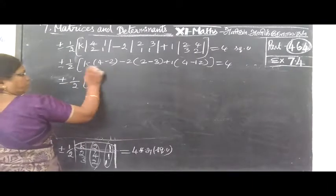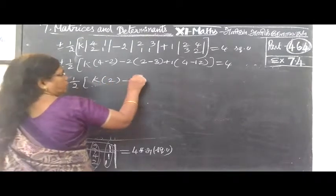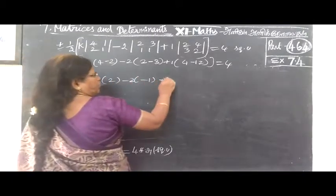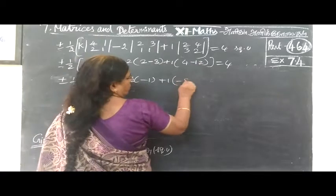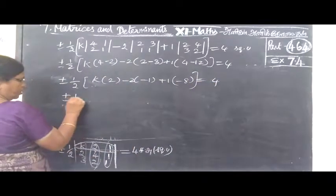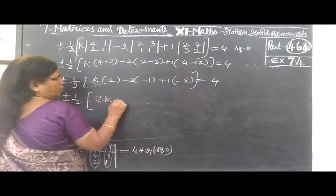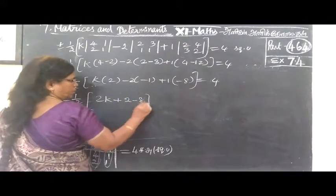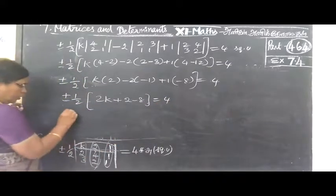4K. K bracket 2 minus 2 minus 1, then minus 8 equal to 4. So plus or minus this row. So 2K plus 2 minus 8 equal to 4.